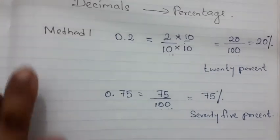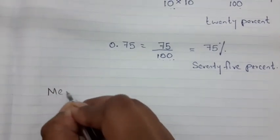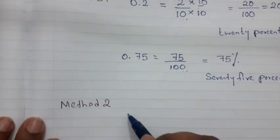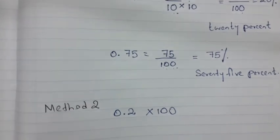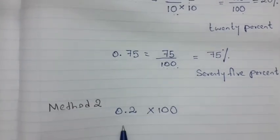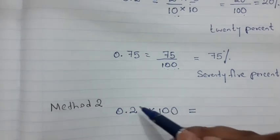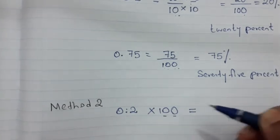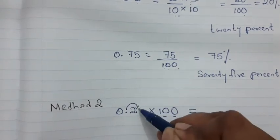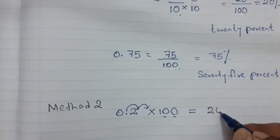Now let's look at Method 2, using the same examples. For 0.2, simply multiply the decimal number by 100. You need to move the decimal point 2 places forward, since 100 has 2 zeros. So 0.2 becomes 20%. We get the same answer as Method 1. Some students may find this one-step method easier.